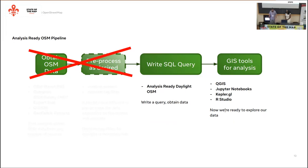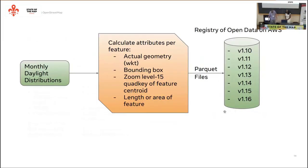We want to get to a point where you can write a query, obtain data, and just put it right into those tools. We take our monthly Daylight distributions, and per feature, we calculate some extra attributes that we think are useful for researchers. What we're talking about today is what we call the OSM Features Analysis Ready Parquet file.